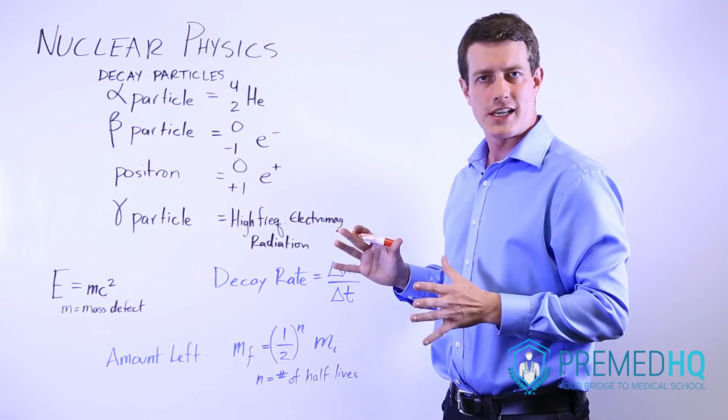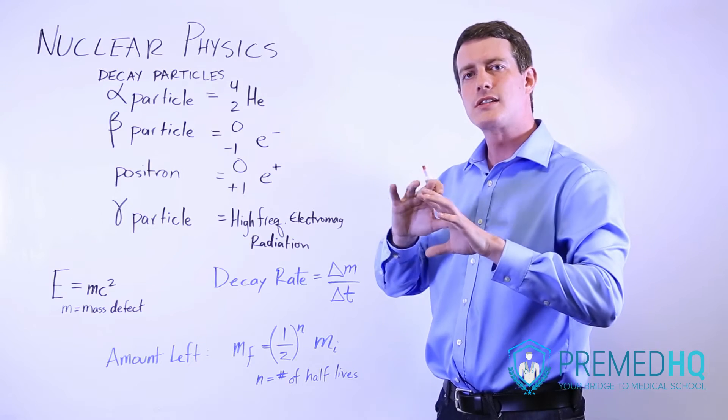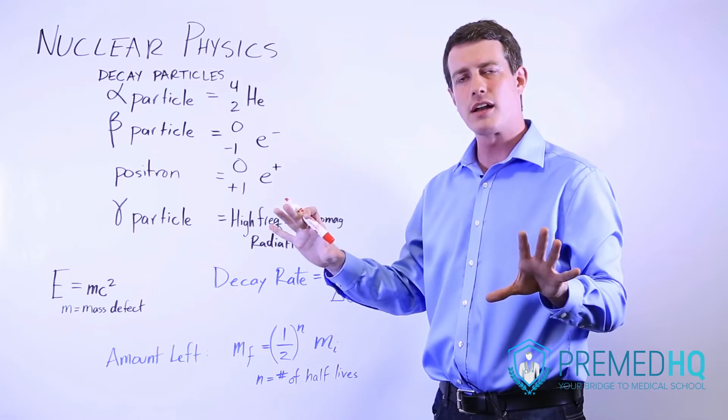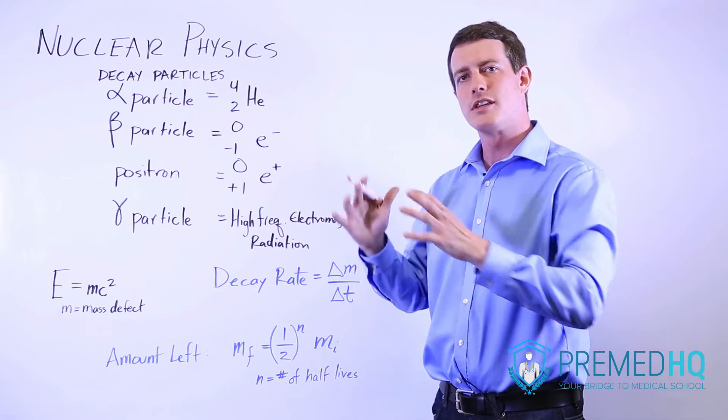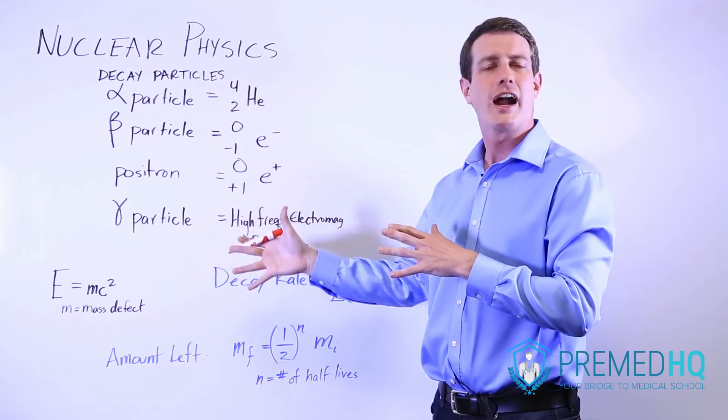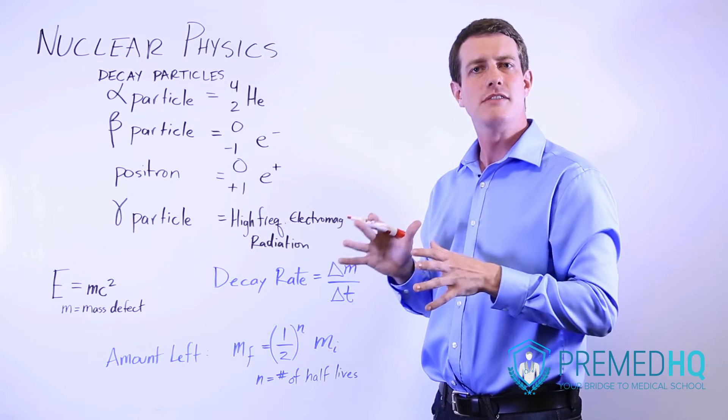When you have a nuclear decay that occurs, sometimes the sum of the masses of all the products will not equal the mass of the reactants on the other side, and that's what they call a mass defect.